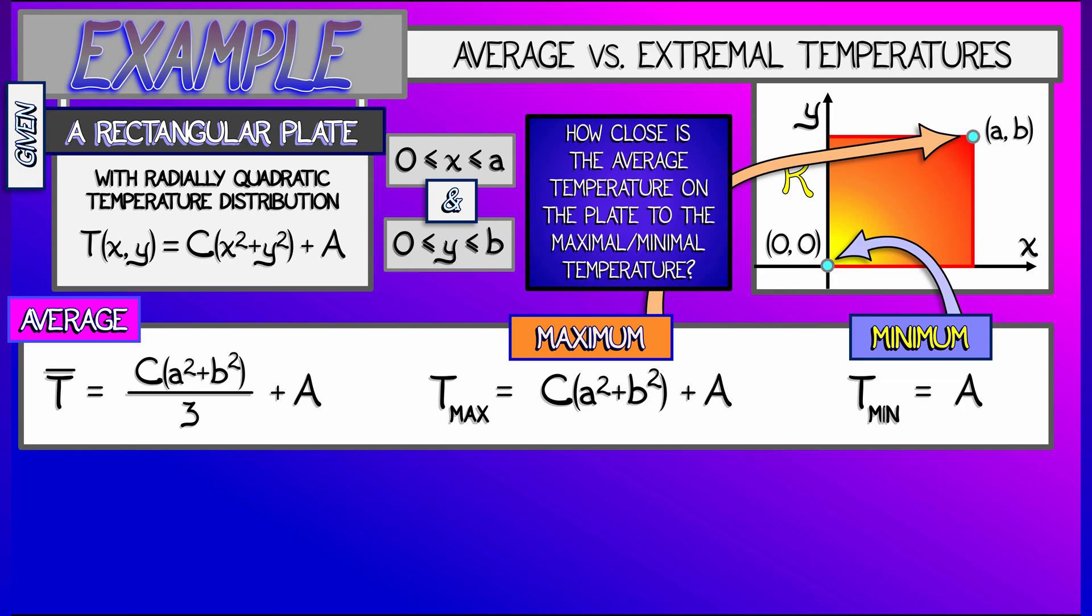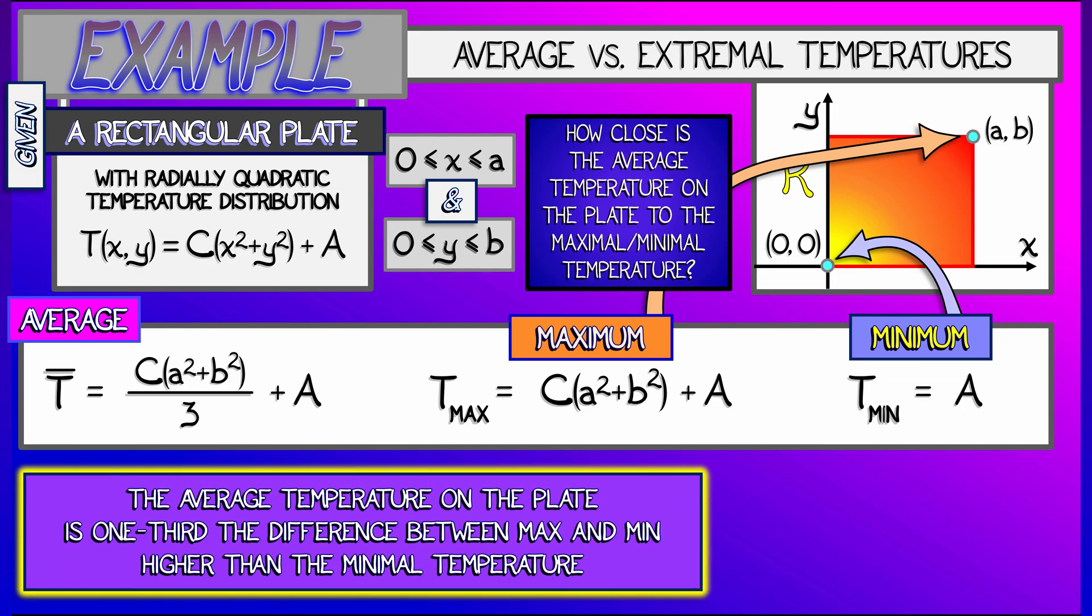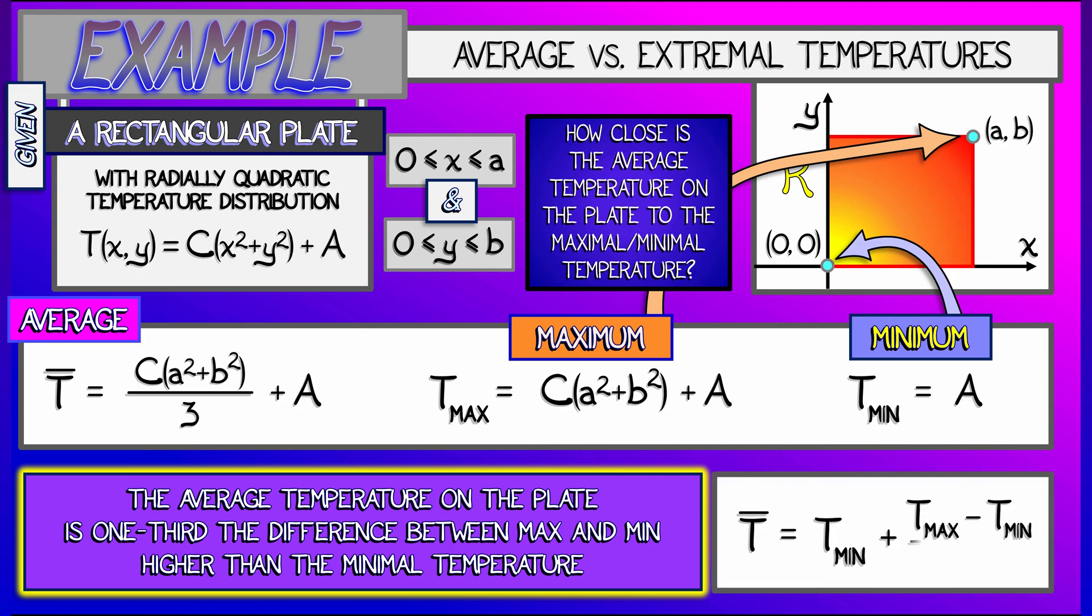So to summarize what we've found, the average temperature on that plate, T bar, is one-third of the way in between the minimal and the maximal temperature. And it's closest to the minimal temperature. That's a simple example of an average function over a very simple two-dimensional domain.